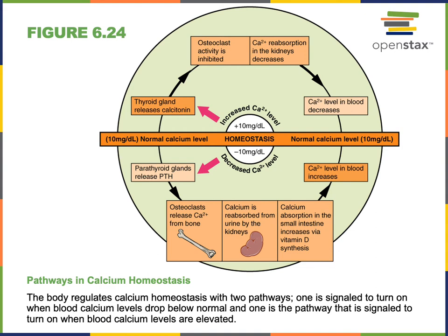Bone remodeling is also important to maintain blood calcium homeostasis. As parathyroid hormone stimulates osteoclasts, more calcium will be released from bone and bone will become weaker in the area where calcium has been released.